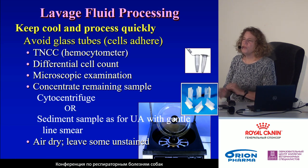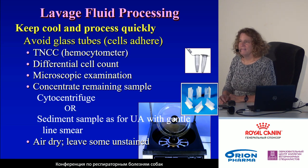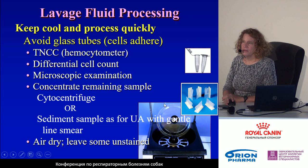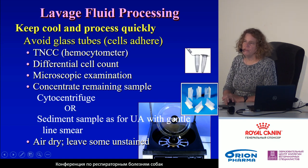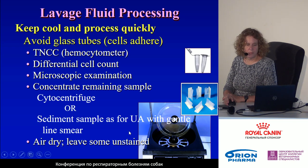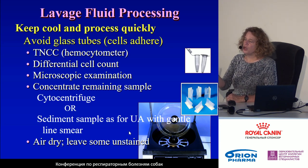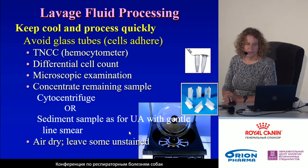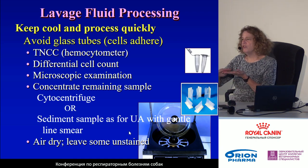Remember that this sample is mostly saline, and therefore you need to concentrate the sample to have enough cells to interpret. If you are close to a laboratory, they will use a cytocentrifuge. Most clinics don't have a cytocentrifuge, so instead you can prepare the sample as you would for a urinalysis — just as you would concentrate a urine pellet to collect cells for examination, you would concentrate the bronchoalveolar lavage fluid the same way.